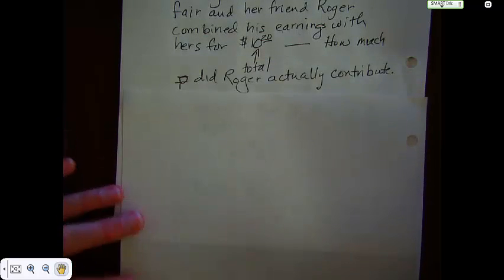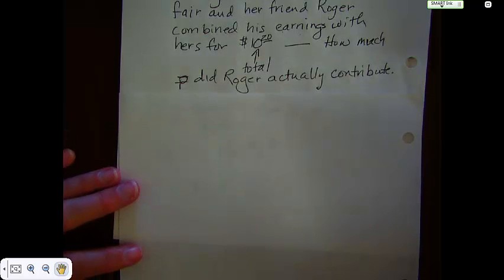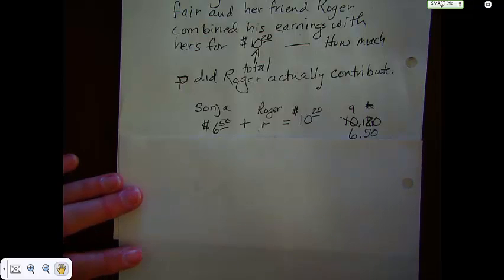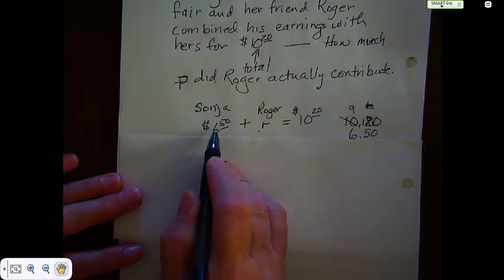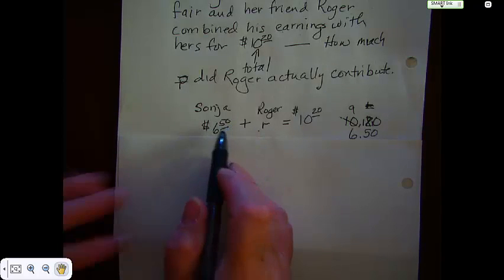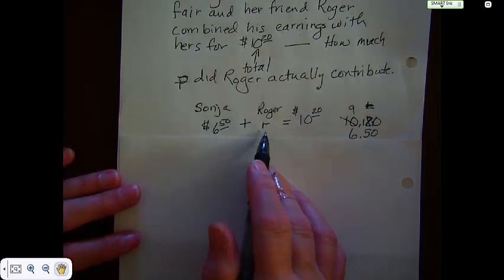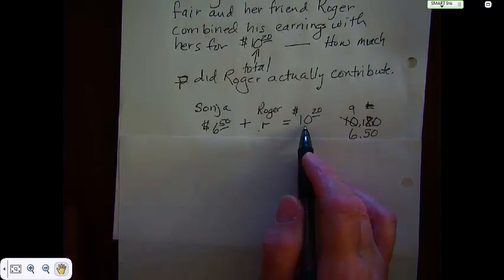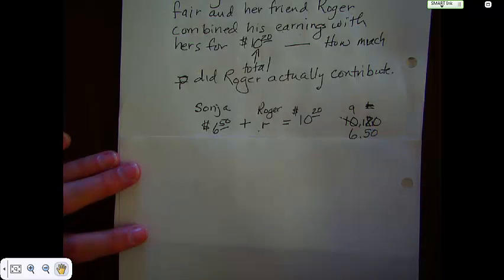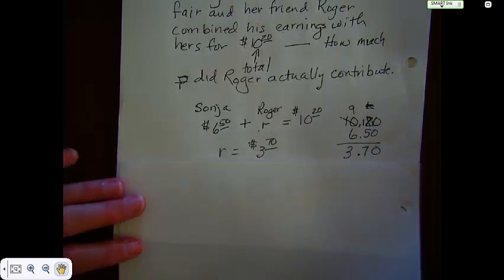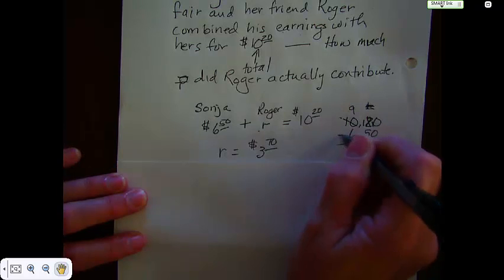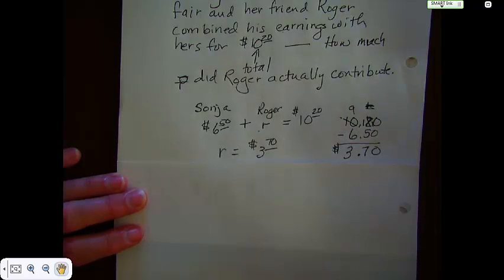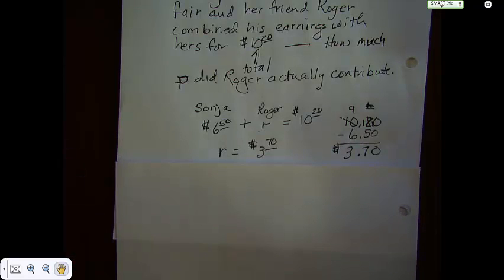The problem could be written like this. You have Sonia with $6.50. Roger, we don't know, and together they earn $10.20. Now, most of us to solve this problem would probably subtract, which is what I have over here. And if you do subtract, you end up with $3.70, which makes sense.